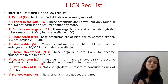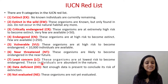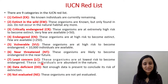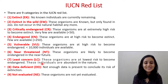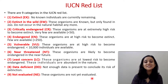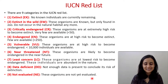Least Concern individuals are abundant in nature. Next is Data Deficient (DD) — not enough data is present to conclude its risk of extinction. The last one is Not Evaluated (NE) — these organisms have not yet been evaluated. These are the categories found in the IUCN Red List.